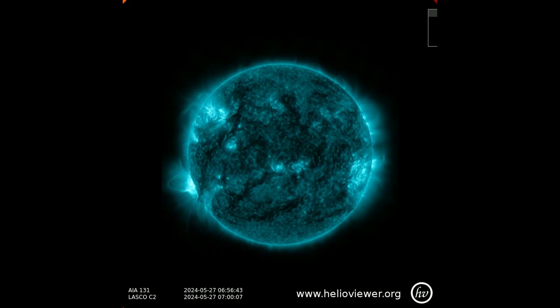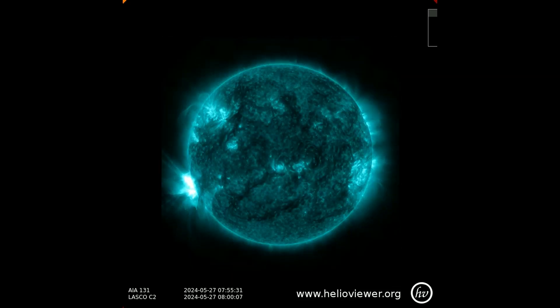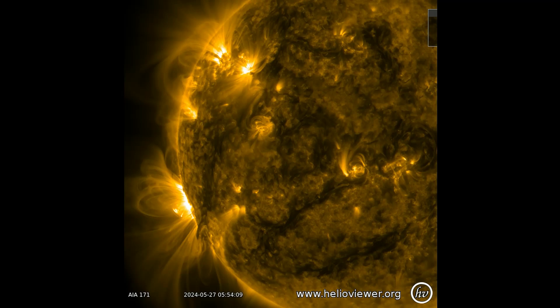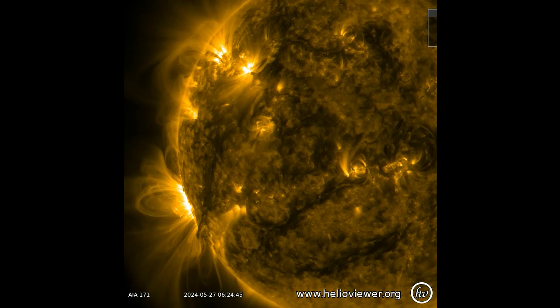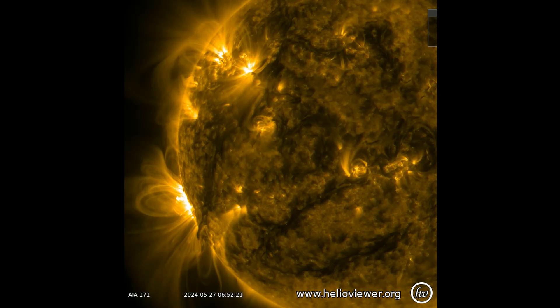Here is the X flare as observed on this SDO131 filter. This 171 filter gives a good view of the coronal mass ejection as it leaves the surface of the Sun.